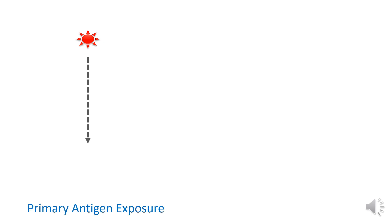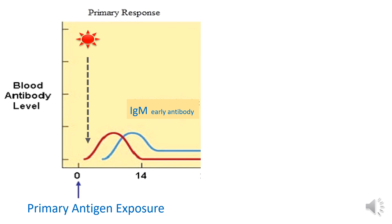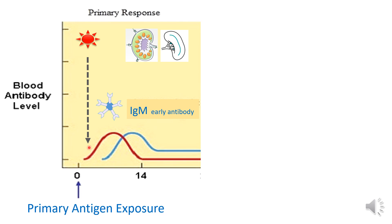On first exposure to an antigen, known as the primary antigenic exposure, the level of immunoglobulin is initially 0. As the body begins to fight the antigen, the first immunoglobulin produced is immunoglobulin M (IgM). This entire process is known as the primary immune response and takes place inside the spleen and lymph nodes. The pentavalent IgM takes some time to rise and gradually declines. The lag period after antigen exposure is usually 4 to 10 days, though this depends upon the type of pathogen.